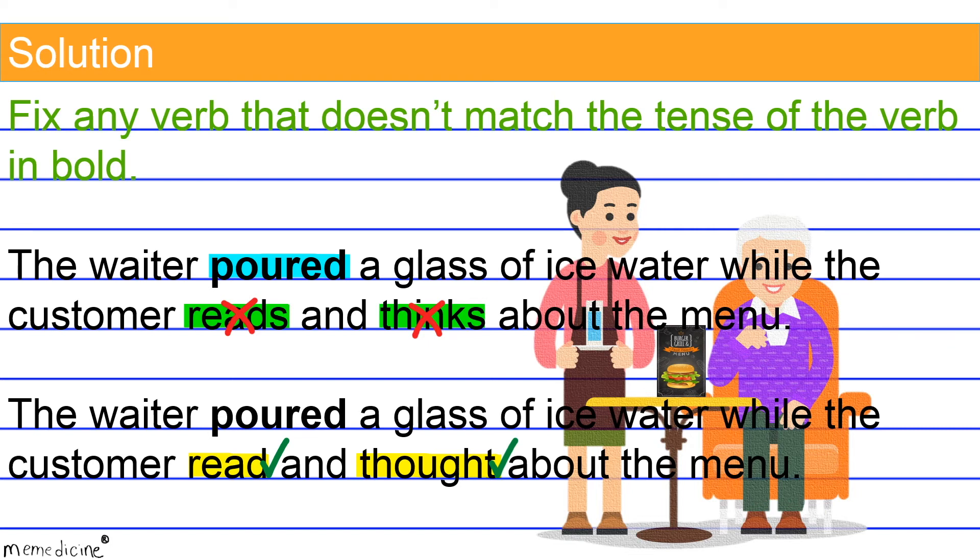I also want you to notice that many regular third person singular present tense verbs and regular plural nouns have opposite rules of formation as it relates to pluralization. Regular third person singular present tense verbs take an S at the end, as in reads and thinks, whose singular subject is the customer. Whereas regular plural nouns take an S at the end.